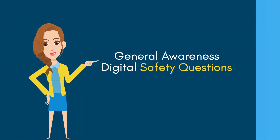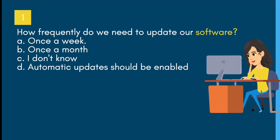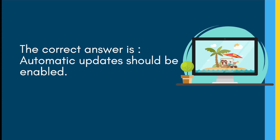General awareness digital safety question: How frequently do we need to update our software? A) Once a week, B) Once a month, C) I don't know, D) Automatic updates should be enabled. The correct answer is: automatic updates should be enabled.